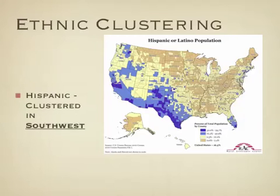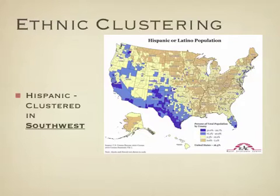Looking at those three major groups and where they're clustered together — clustering meaning where they're placed — Hispanics are clustered mainly in the southwest. Looking at the chart on the right, the darker the color represents the greater population density of those of Hispanic or Latino ethnicity. You can see the southwest is where they're most dominant.